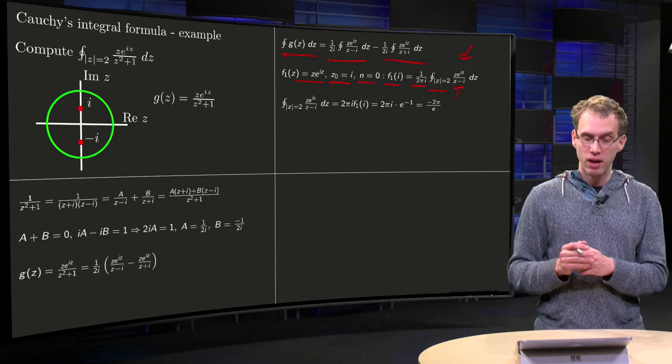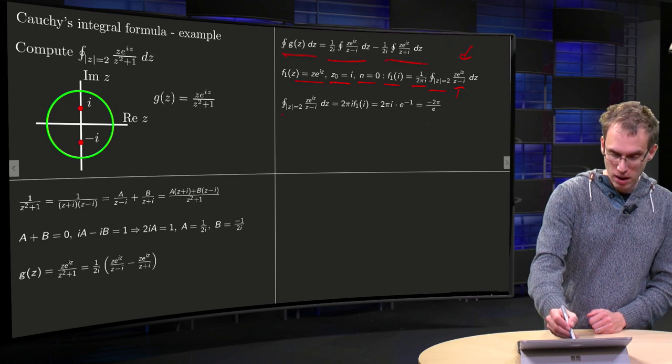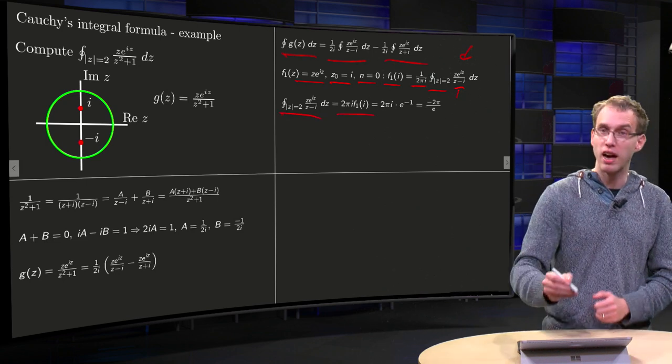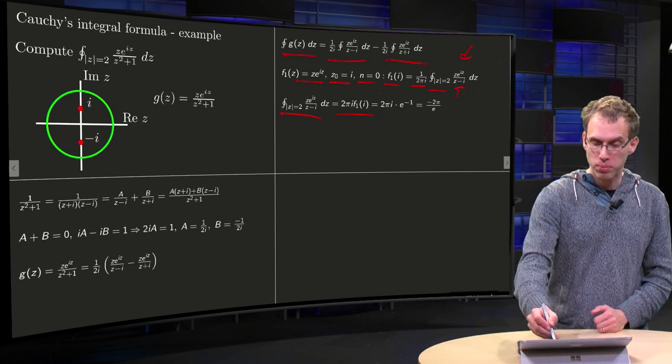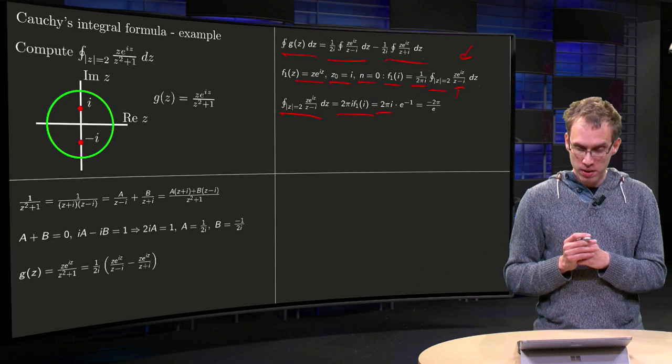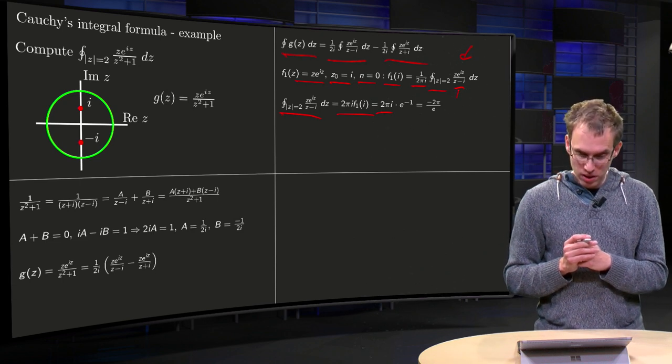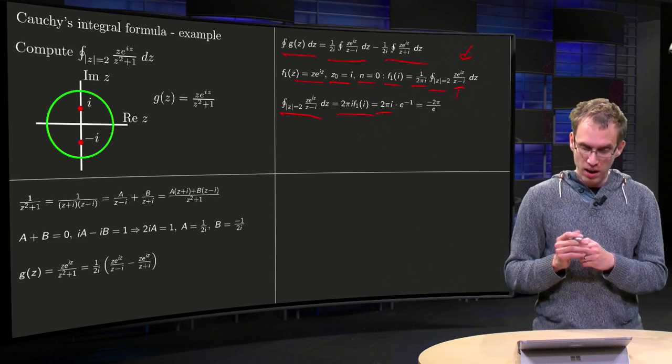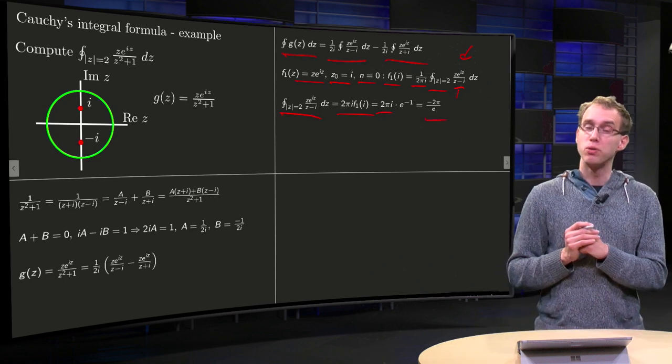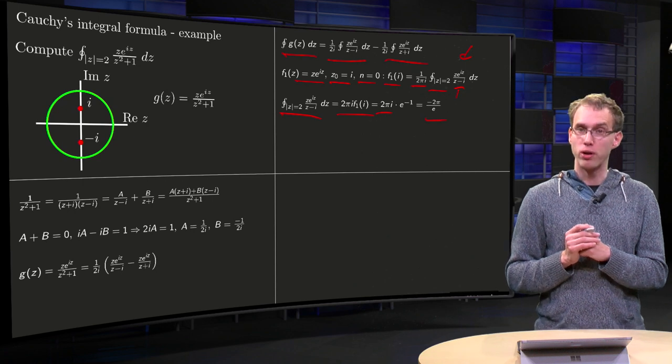We can compute in this way our integral, which we want to compute because z equals 2^i times f₁ at i equals 2πi, and f₁ equals z·e^(iz), so that gives us, an i is missing here, e to the power minus 1, and this one is correct again, so 2π over the Euler number.